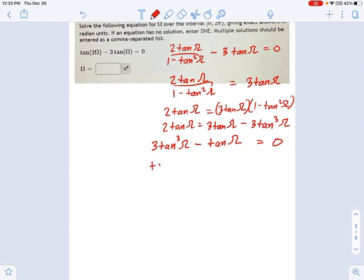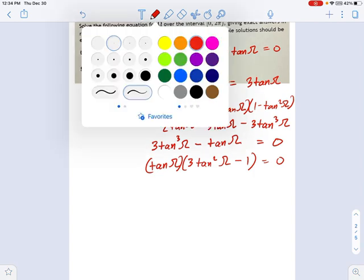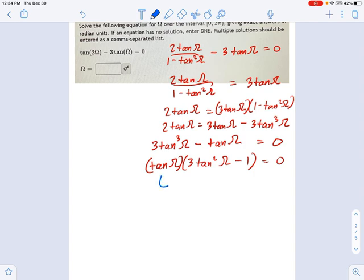So we pull out tangent omega. That's the common, the greatest common factor. And what's left is 3 tangent squared omega minus 1 equals 0. So now we're not done factoring. Let's see what can we do here. Well, I think at this point we should just go ahead and try to solve this. So tangent omega equals 0. That's one of our solutions.